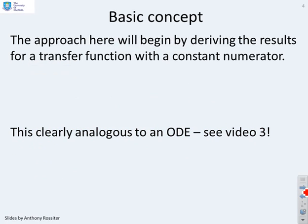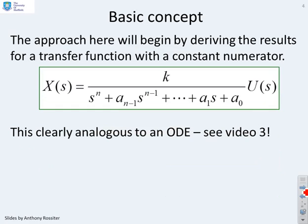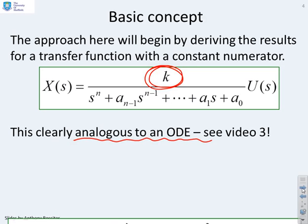What's the basic concept then? The approach we'll use here will begin by deriving the results for a transfer function with a constant numerator. So we're going to start with a simple example. Here we go. So you'll notice that the numerator has only a constant in it. And we'll look at more generic numerators later.